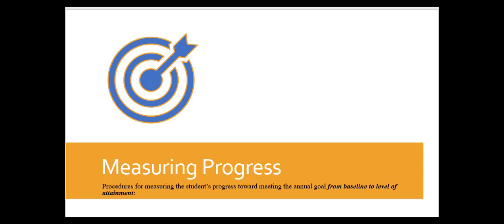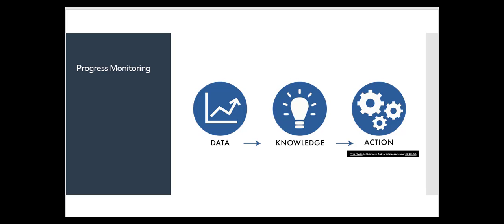For measuring progress, we need data. Data-based decisions can be made to move students from their present level by way of making decisions about whether to change, intensify, or reduce the support or intervention that we are putting in place to meet the disability-related need connected to that IEP goal.